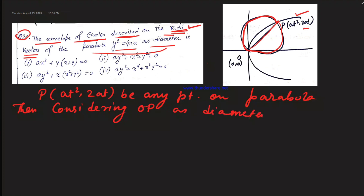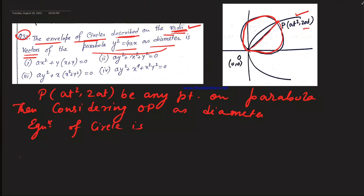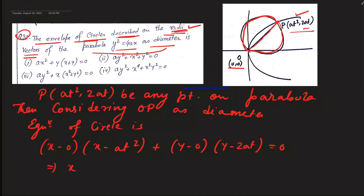The equation of the circle with diameter endpoints at (0, 0) and (at², 2at) is: (x - 0)(x - at²) + (y - 0)(y - 2at) = 0. Expanding: x² - at²·x + y² - 2at·y = 0.